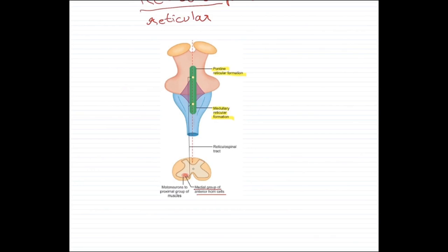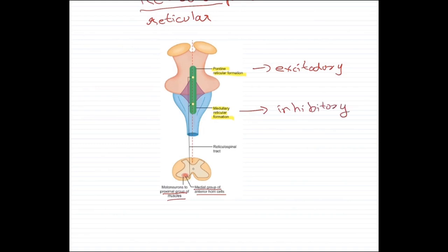Although both formations supply the proximal group of muscles and maintain posture, they have different functions. The pontine reticular formation is excitatory — it stimulates those muscles to contract. The medullary reticular formation is inhibitory — it inhibits contraction and relaxes those muscles. The coordination between these two formations helps perform actions like walking, jumping, sitting, and standing, because the coordination of anti-gravity posture muscles is maintained by these nerve tracts.